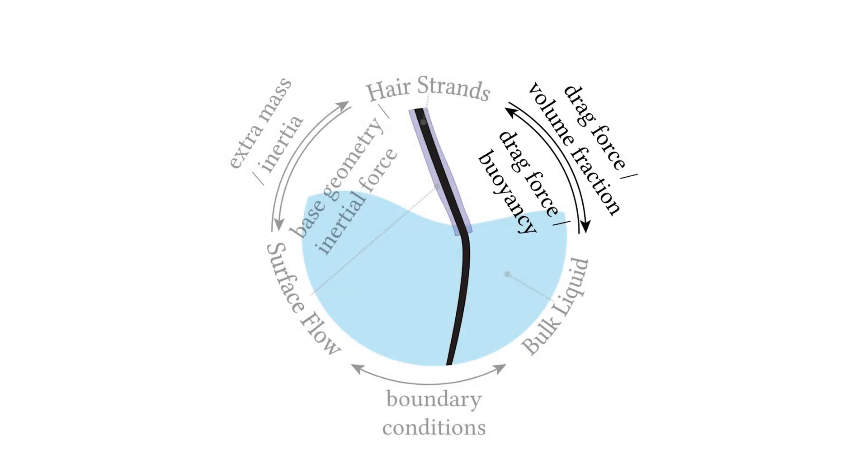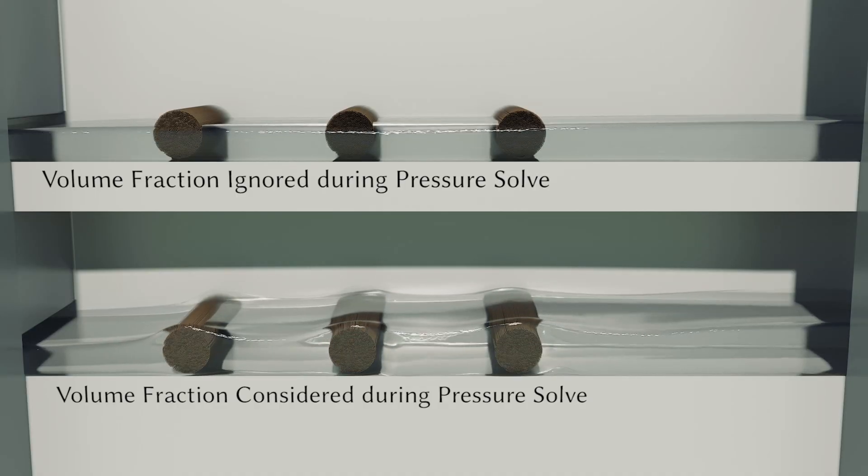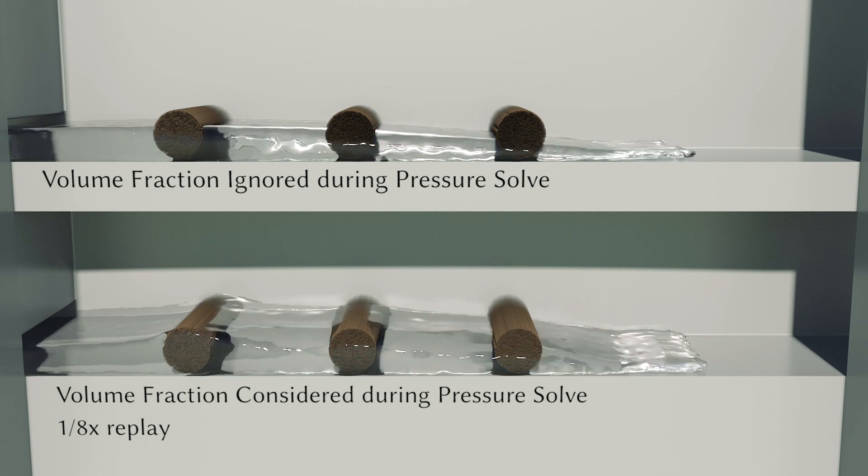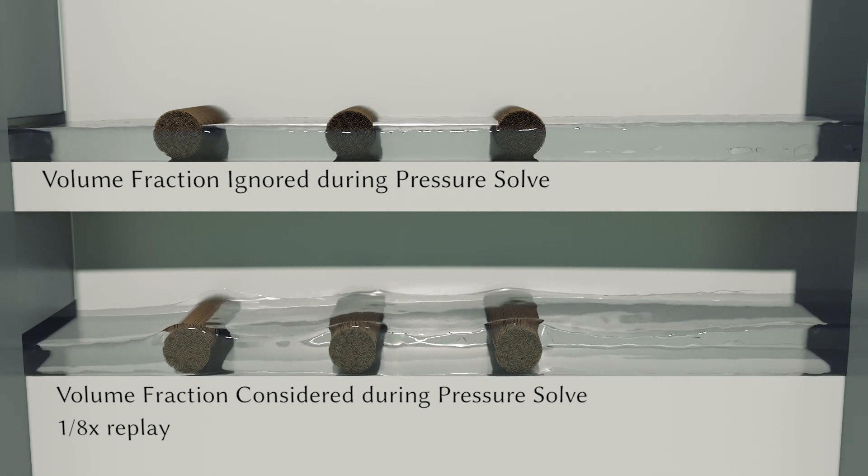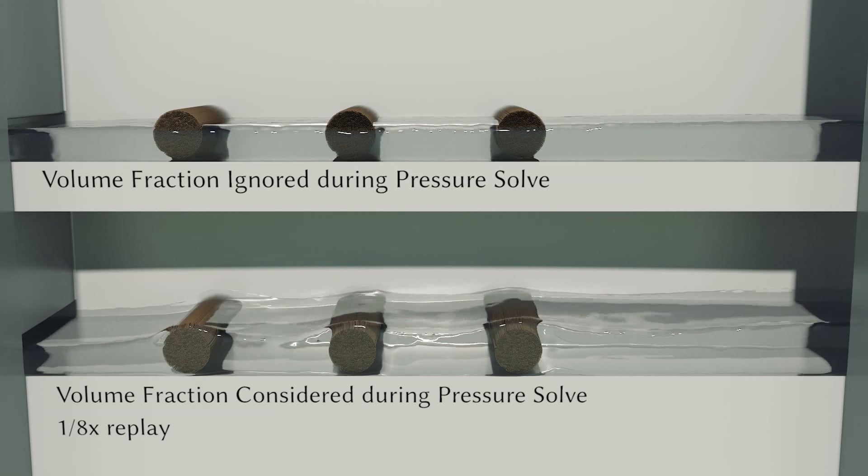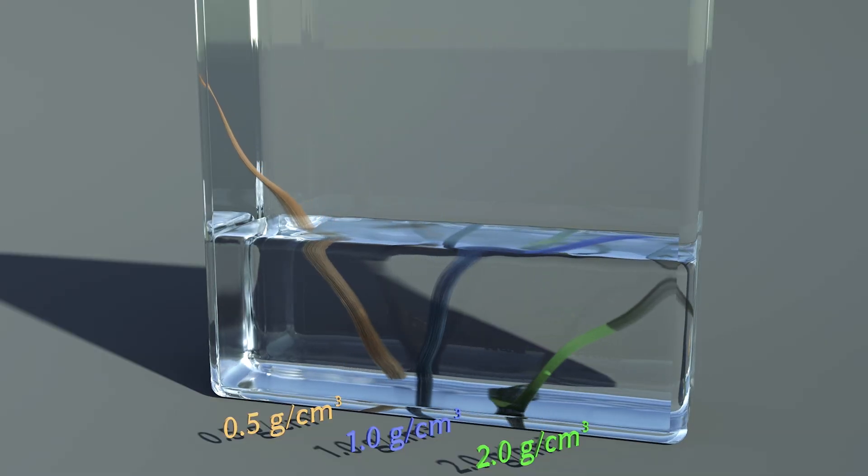The strand is coupled with bulk liquid through the fluid volume fraction, pressure, and drag force. Here, we compare the simulations with and without the volume fraction term considered when solving the pressure equation for liquid flowing through hair. With the volume fraction considered, the liquid region naturally expands as it passes through.